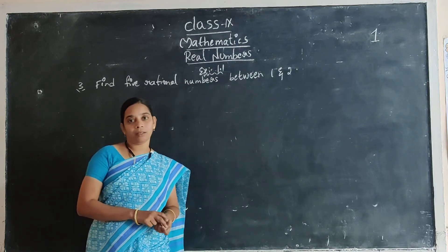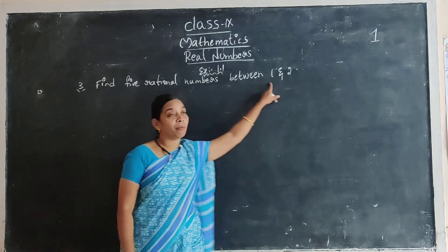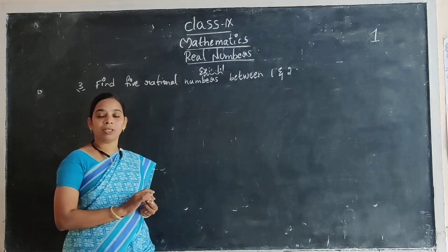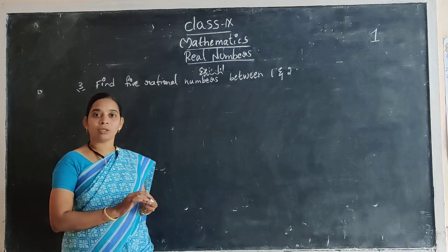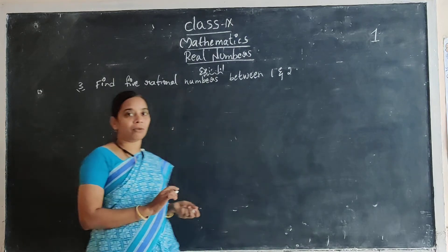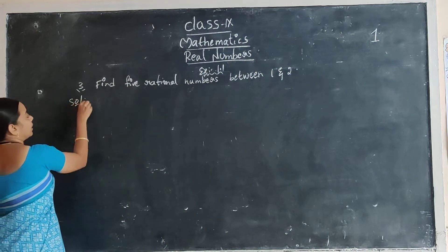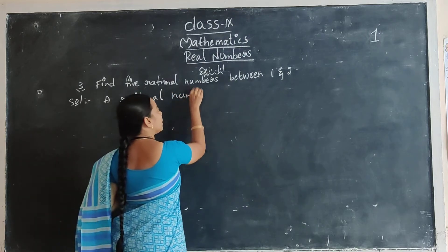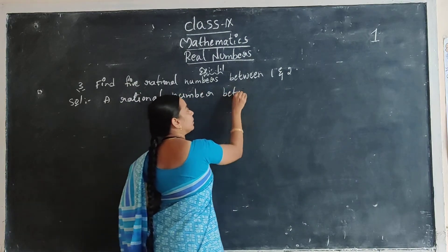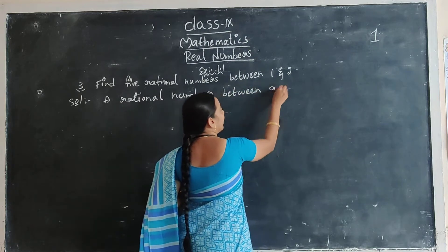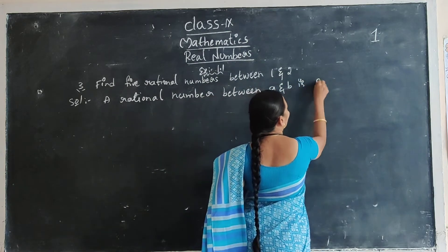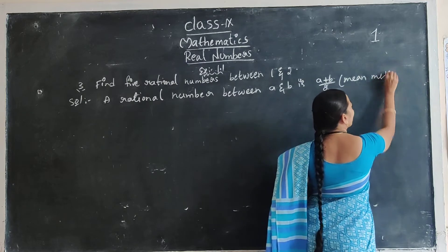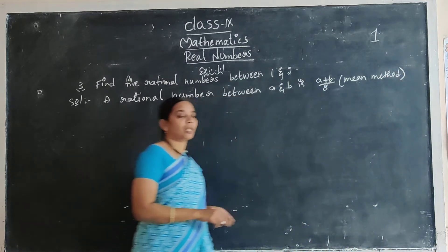Direct method means mean method. Everyone knows this. If the given numbers are taken as A and B, how to find a rational number between any two rationals A and B — the mean formula is A plus B by 2. So a rational number between A and B is A plus B by 2. This method name is mean method. Everyone knows this from eighth class.